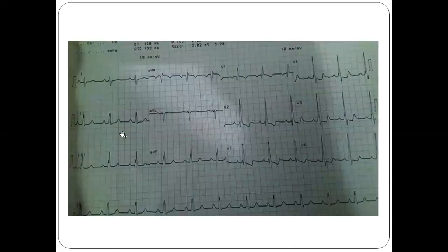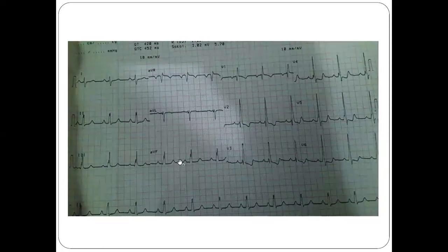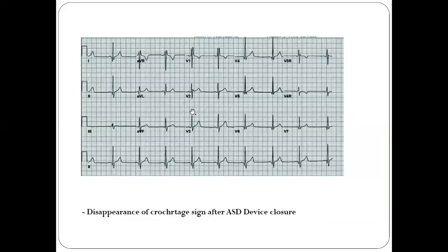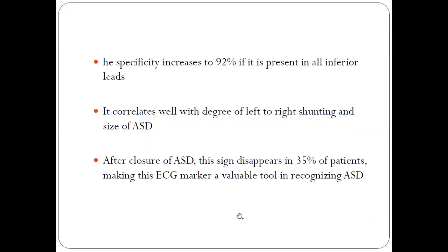You can see here the Crochetage sign in leads 2, 3, and aVF — notching near the R wave. After ASD closure, you can see here that the notching has completely disappeared. Disappearance of the Crochetage sign occurs after ASD device closure, and this has a specificity of around 92 percent.